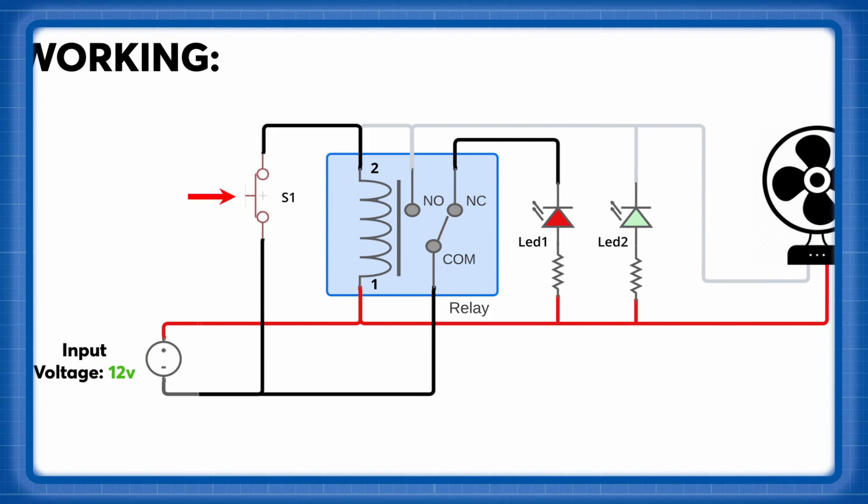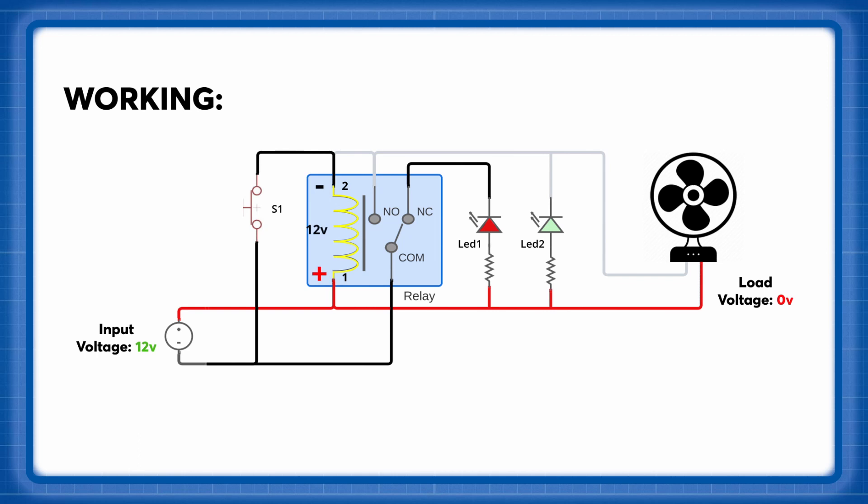The moment this button is pressed, the coil inside the relay gets magnetized and the common pin gets connected to the normally open pin, which is also connected to pin 2. So even if the button is not pressed, the coil remains magnetized and we get power at the output.